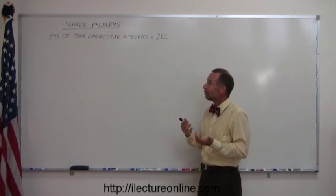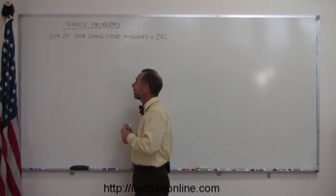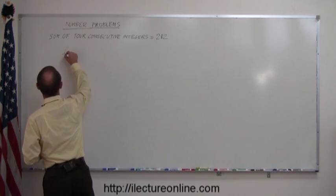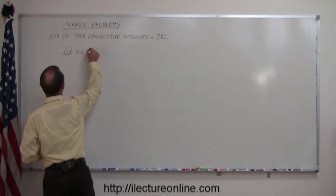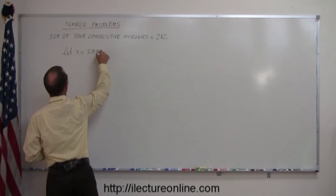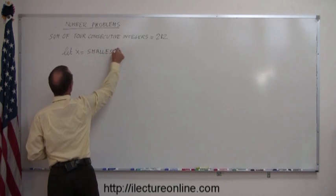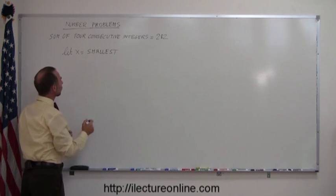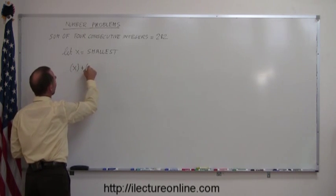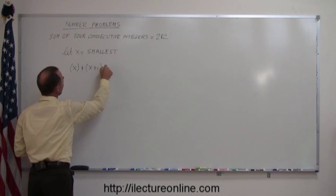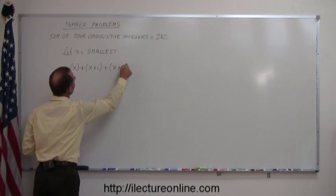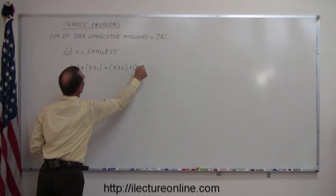So in this case, we don't know what the first one is, so let's call that x. So let x equal the smallest of these integers. So if the first one, the smallest one is x, then the next one would be x plus one, the next one would be x plus two, and the next one would be x plus three.